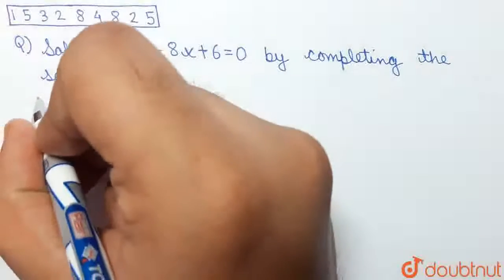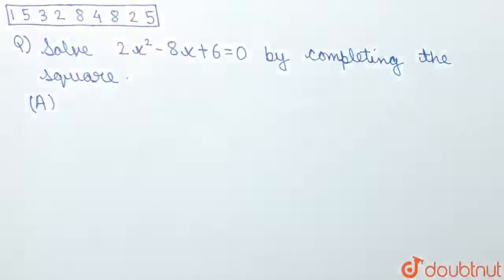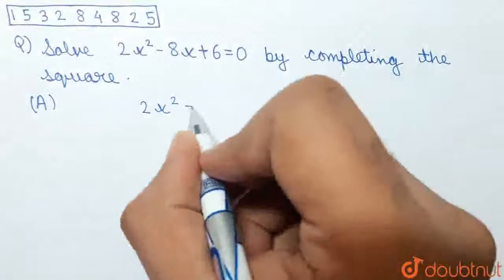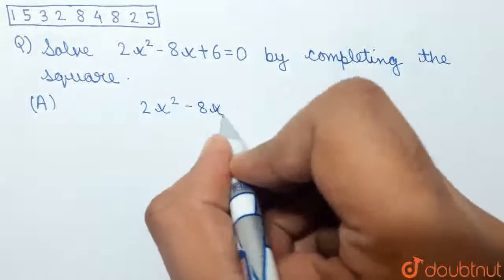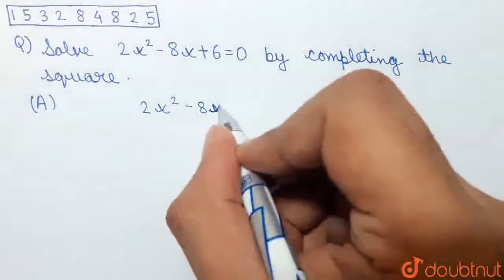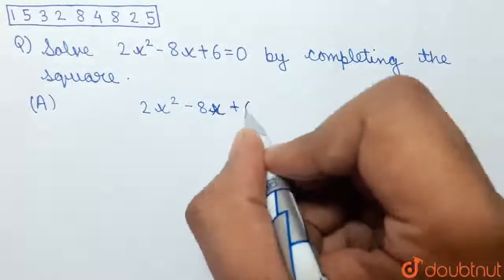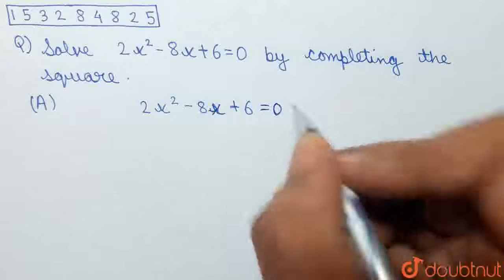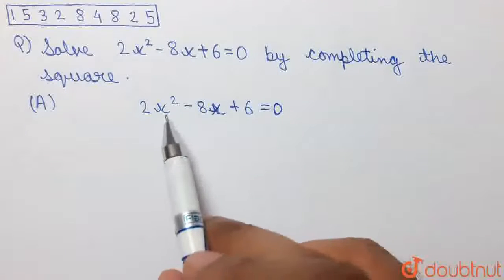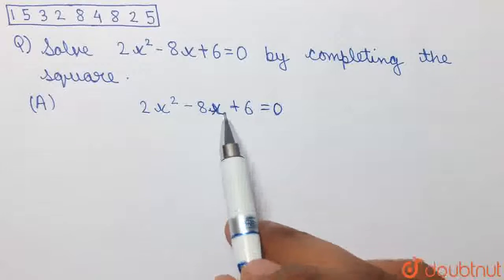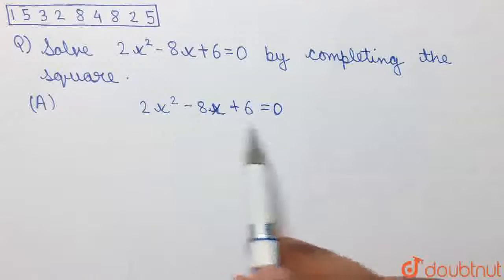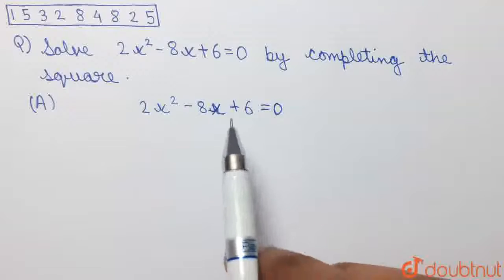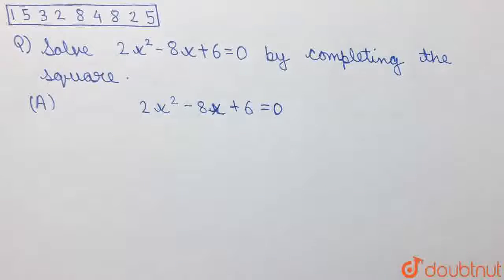The given quadratic equation is 2x squared minus 8x plus 6 is equal to 0. Now, we observe that the coefficient of x squared, the coefficient of x, and the constant term all are even numbers. So the first logical thing to do will be to divide both sides of this equation by 2.